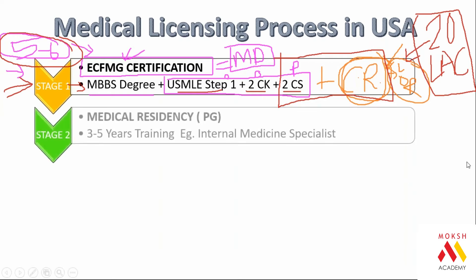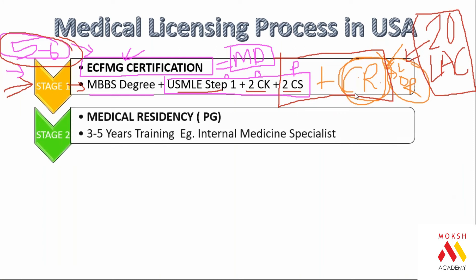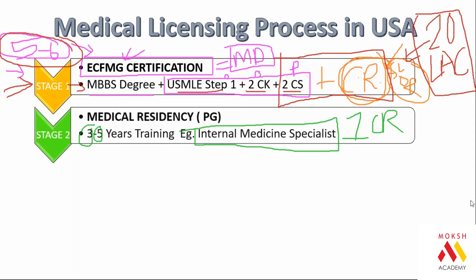Stage two is when you do the actual PG, for a period of three to five years. Medicine is a three-year program, surgery is five years, and neurology is four years — the length depends on the specialization. If you become an internal medicine specialist, you do three years and earn about 35 to 40 lakh rupees per year, so by the end of three years you are making about one crore Indian rupees.